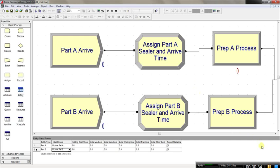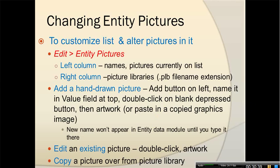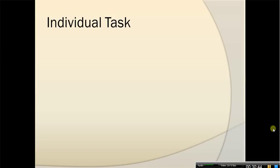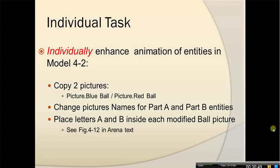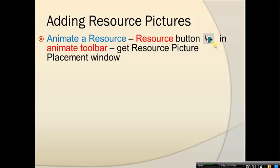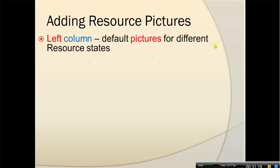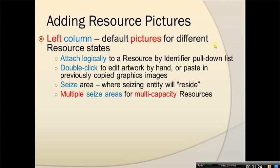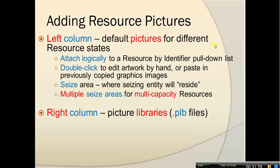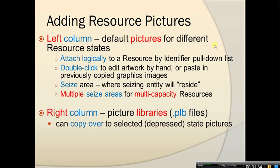Now following the directions, I want you to individually do similar things I just demonstrated. Another thing I wanted to show you is how to animate resources. In the Animate toolbar where we used it to animate queues, there is a Resource button right nearby where you can get the resource picture added to your animation. What we're going to do is go through all this and make some changes to resource pictures. You can also change pictures in picture libraries similarly to entity pictures — copy them over and change them.